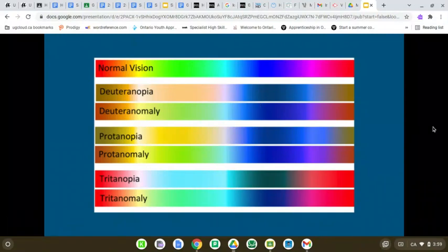Hello, welcome to my presentation on colorblindness. There are three different categories of colorblindness: red-green colorblindness, blue-yellow colorblindness, and complete colorblindness.